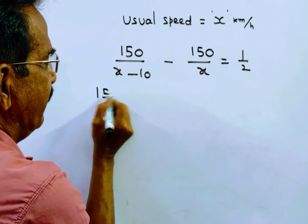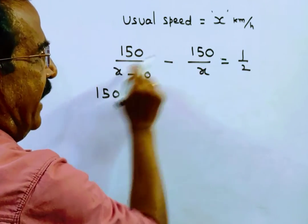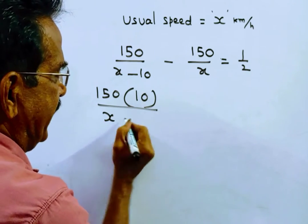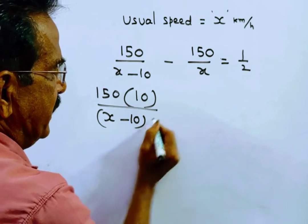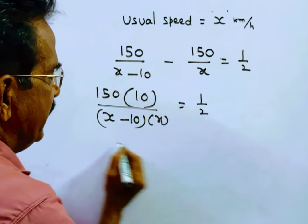This implies 150/(x-10) - 150/x = 1/2. Simplifying, we get 150×10/[(x-10)×x] = 1/2.